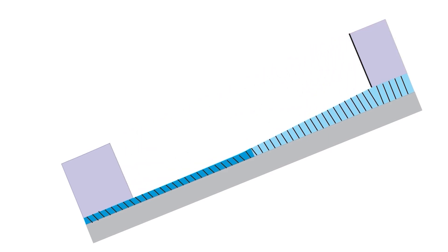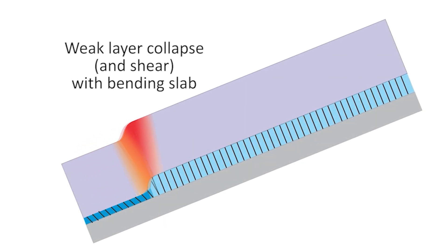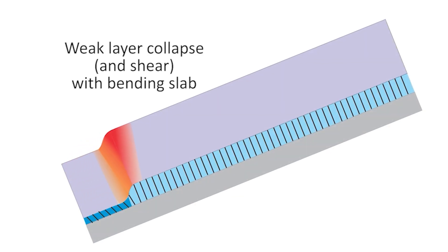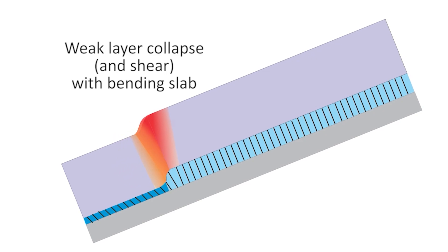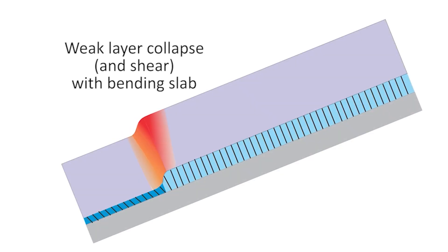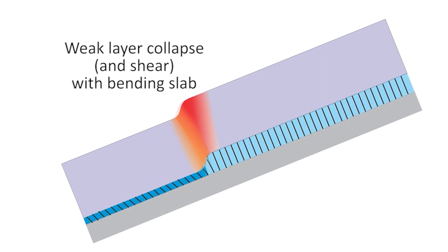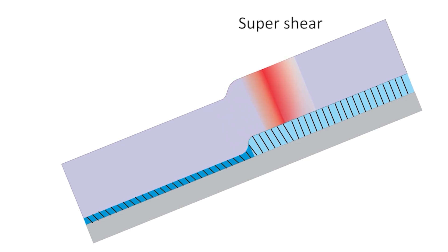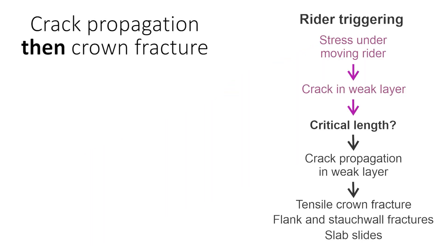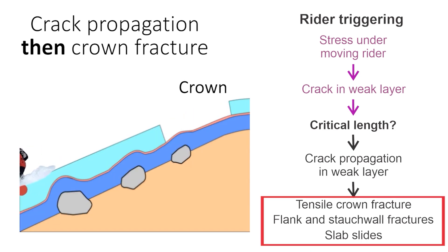This animation only shows propagation upward from the trigger point. In the first stage, the bending wave and collapsing crack usually propagate at 15 to 45 meters per second. This is what we see in the first 10 or so meters away from the trigger point and also in snowpack instability tests. After that, the crack changes into high gear, which is called super shear. During super shear, the crack speed can exceed 100 meters per second. At some point upslope of where the crack initiates, the slab fractures in tension, which is called the crown.